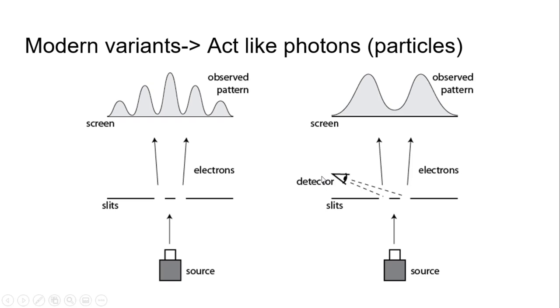Well, when you start to detect which one is going through, then this pattern goes away. We can't see the interference anymore. It's not interfering, it's just like the two particles from before, just by adding this detection.